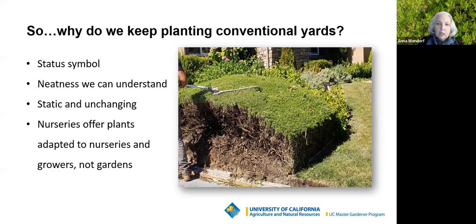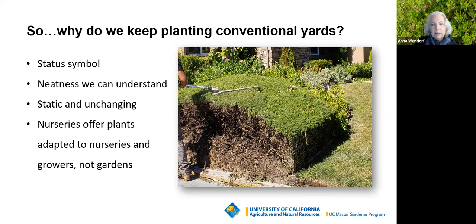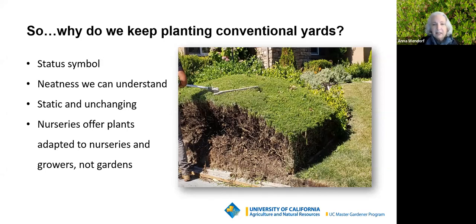Let's look at why we have the kinds of gardens we do — the very traditional lawn, some shrubs up against the house, maintained by shearing tightly to keep it under control. This particular paradigm has been a status symbol for about 150 years. It's a neatness people understand; it's a unifying factor in the community. It's static and unchanging, which makes it simpler to understand. Nurseries offer plants that look cute in containers and full in a one-gallon pot with lots of flowers — but they're not necessarily adapted to our environment; they're adapted to nurseries and growers.